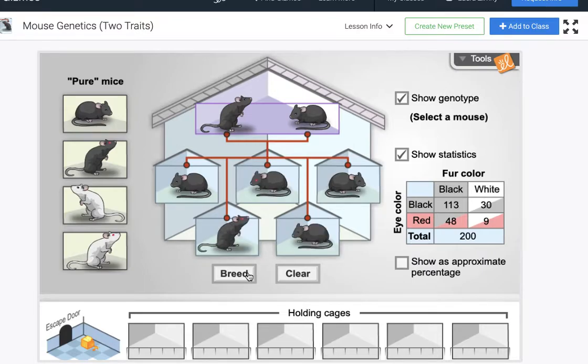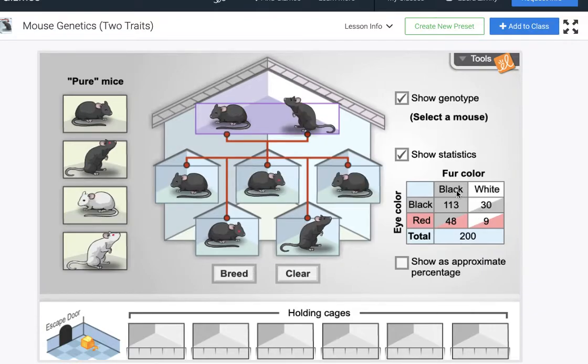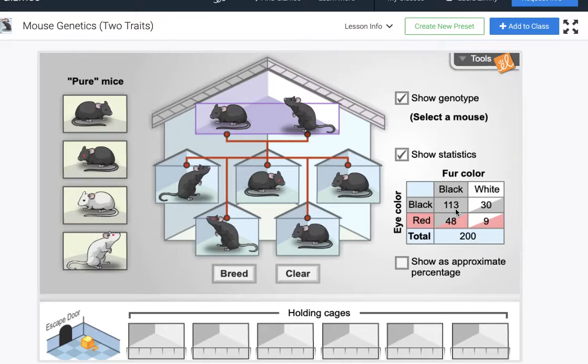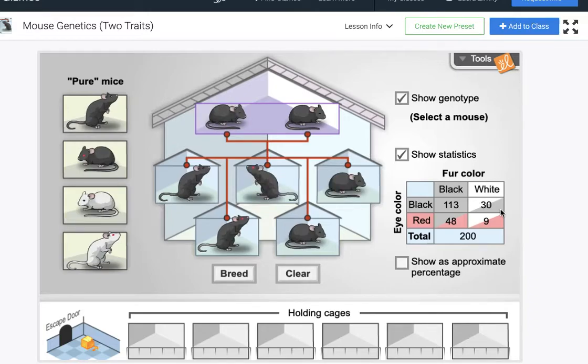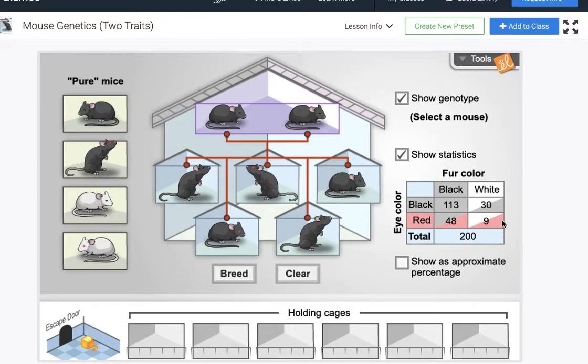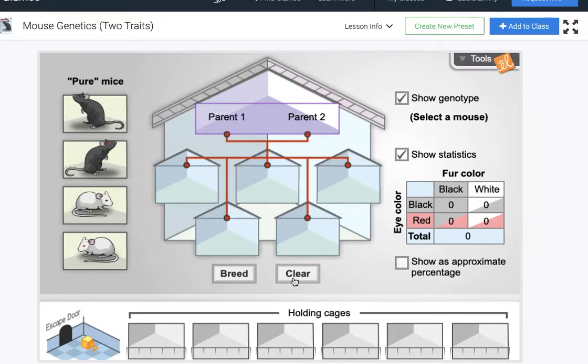Okay and then we're gonna look at the statistics of that in the follow-up quiz. So please at this time take a note of what the offspring ratios are. Again we have black fur color with black eye color occurring 113 out of 200 times, we have white fur color with black eye color occurring 30 out of 200 times and then we have the other data down here. So just take a quick screenshot of this or make some notes of that.